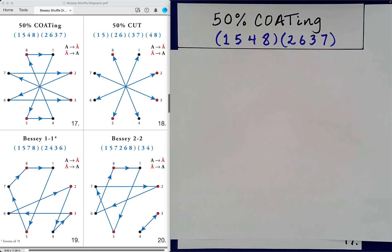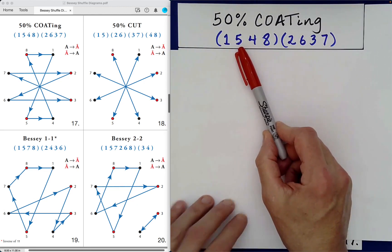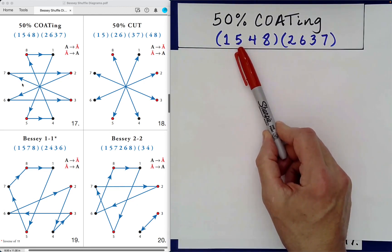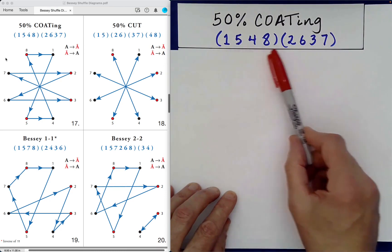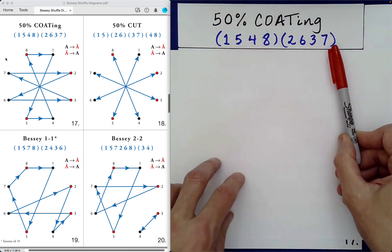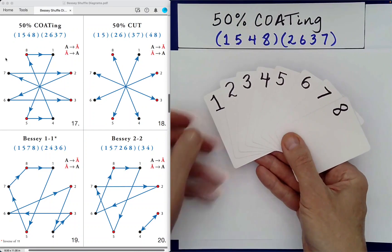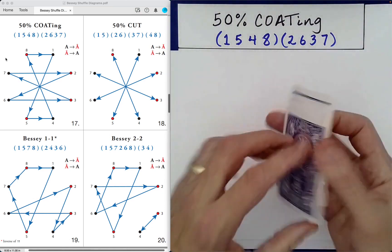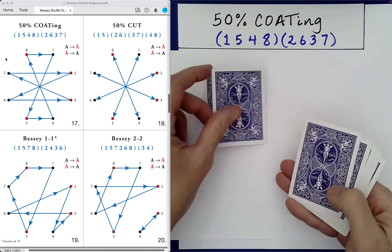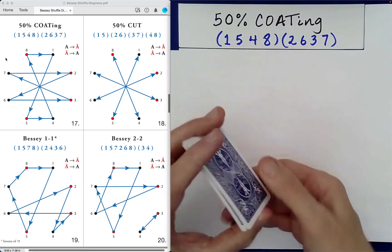Picking up where we left off in the fourth video in this series devoted to Bessie's shuffle diagrams, we're going to look at the 17th shuffle as listed on the top left side of the screen. It's called a 50% coating and here is the cycle permutation representation of that shuffle. So let's go ahead and illustrate a 50% coating. As always we'll begin with the order packet 1 through 8 to help us keep track of the movement of the cards. So a 50% coding is where we simply count out half the cards 1, 2, 3, 4 and drop the rest on top. We call that a 50% coding of the cards.